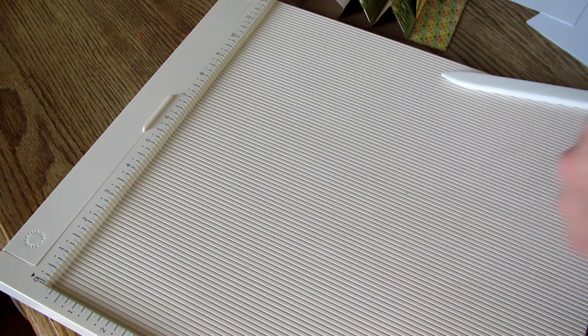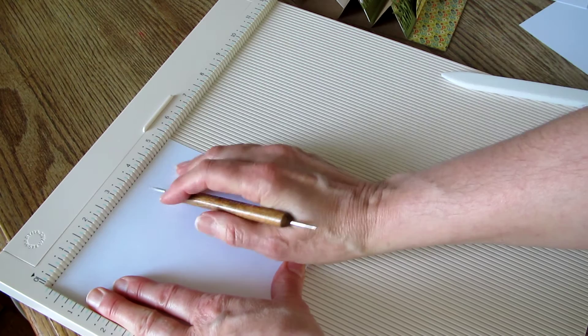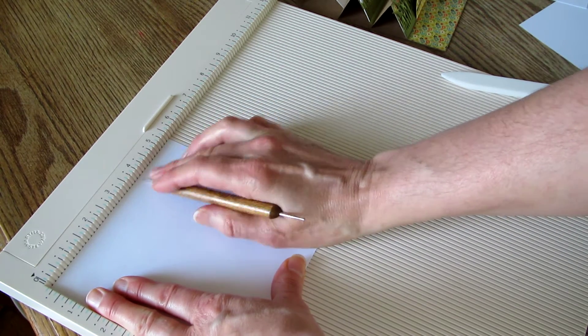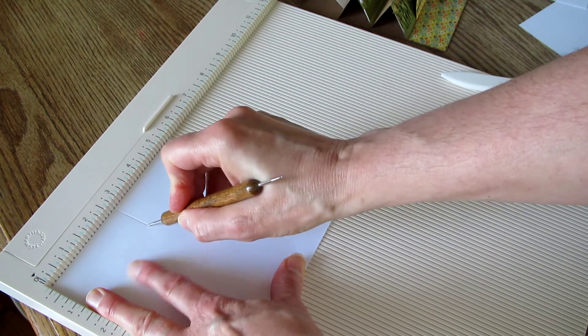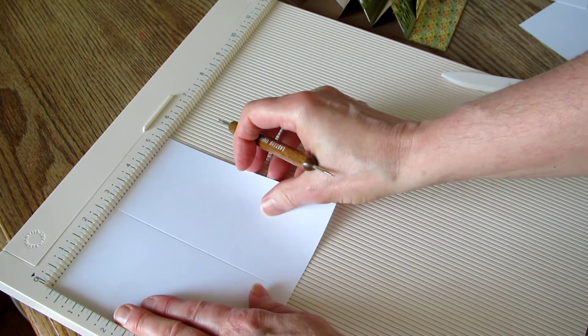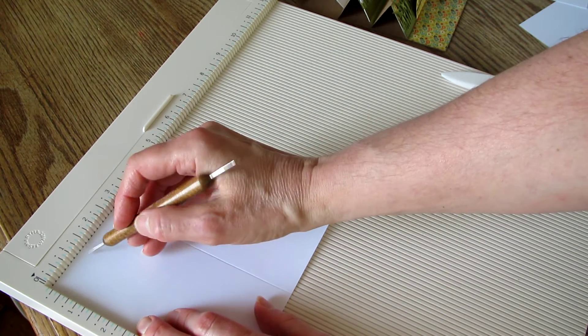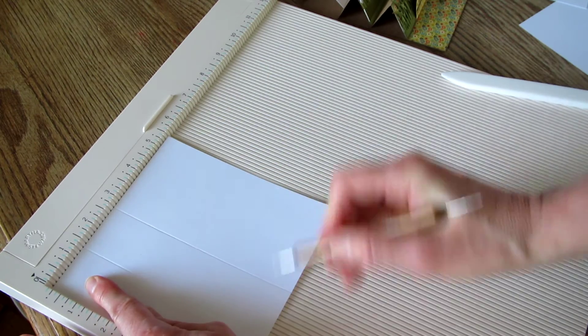I'm going to keep going and add some more. This is five and a half by five and a half, and I'm going to score that at two and three quarters. I'm using the bigger end of my stylus to score these. And then one and three eighths, in half and in half again.